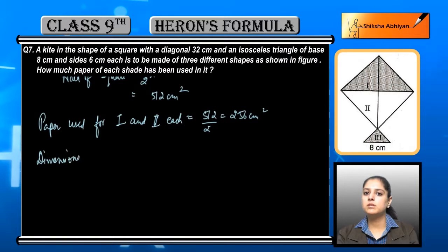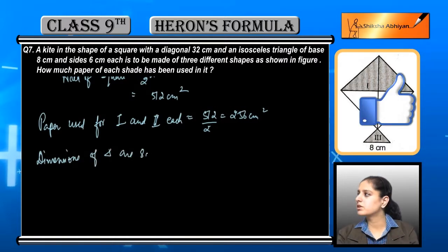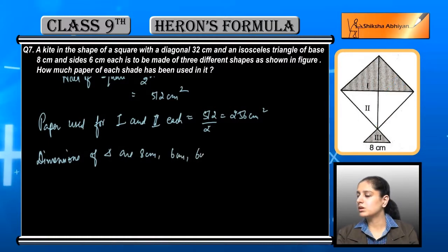Now the third region given is an isosceles triangle and its dimensions are 8 cm, 6 cm and 6 cm. So we have to find the same way.